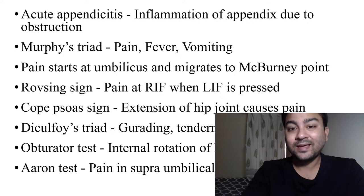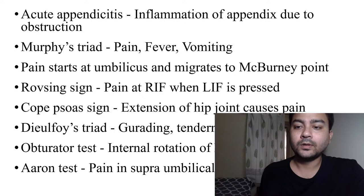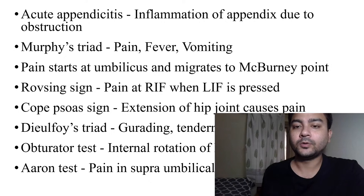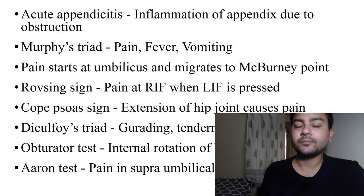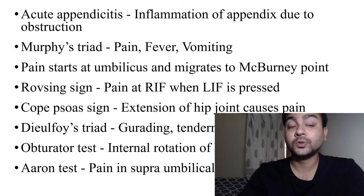Pain starts at the umbilicus and then migrates to McBurney's point. McBurney's point is a very important landmark while doing open appendicectomy. Pain does not start at McBurney's point — it starts at the umbilicus. Sometimes the pain is mild and the patient may not complain about umbilical pain, but it actually starts there before migrating.